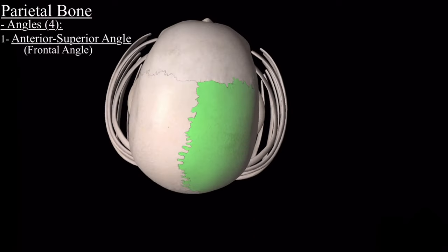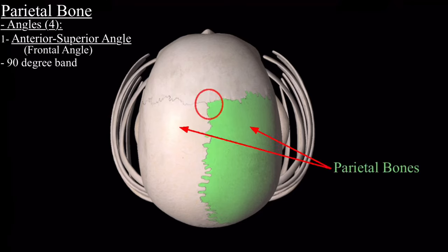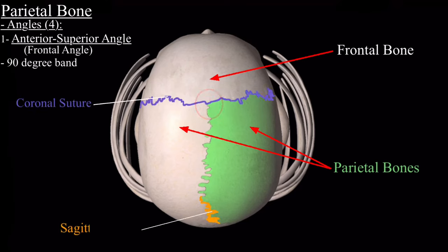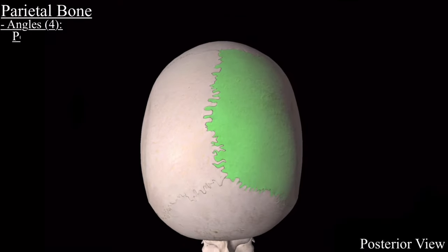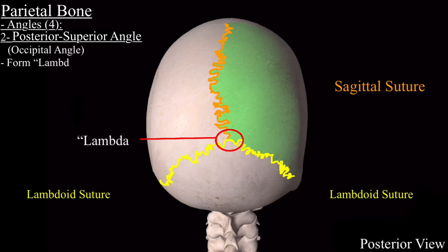The anterior superior angle, also known as the frontal angle, is a 90-degree angle. This angle, together with the corresponding parietal and frontal bone at the meeting point of the coronal and sagittal sutures, forms the bregma. The posterior superior angle, also called the occipital angle, is the meeting point of the sagittal suture and the two lambdoid sutures, and it forms the lambda.